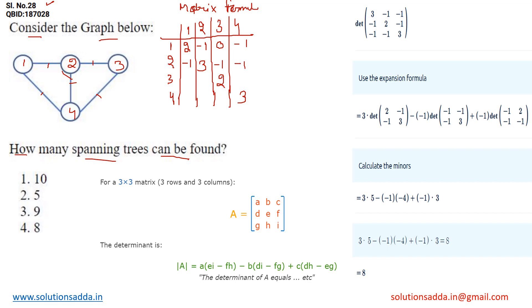Between 3 and 1 there is no direct edge, so write 0. Between 3 and 2 there is a direct edge, write minus 1. Between 3 and 4 there is a direct edge, write minus 1. Between 4 and 1 there is a direct edge, write minus 1. Between 4 and 2 there is a direct edge, write minus 1. Between 4 and 3 there is a direct edge, write minus 1.